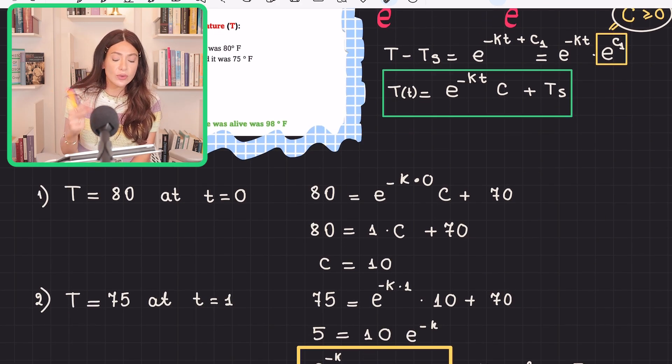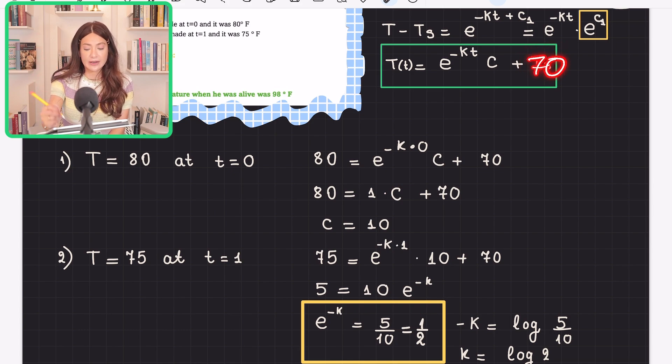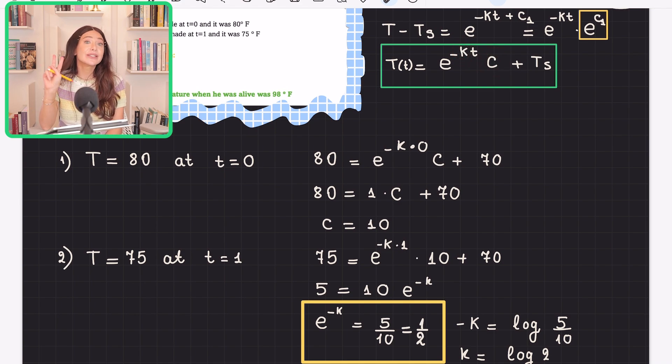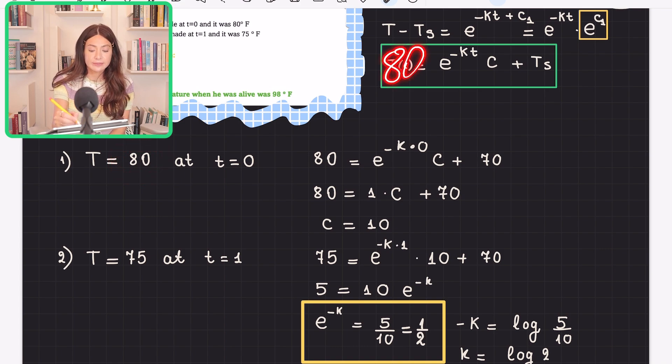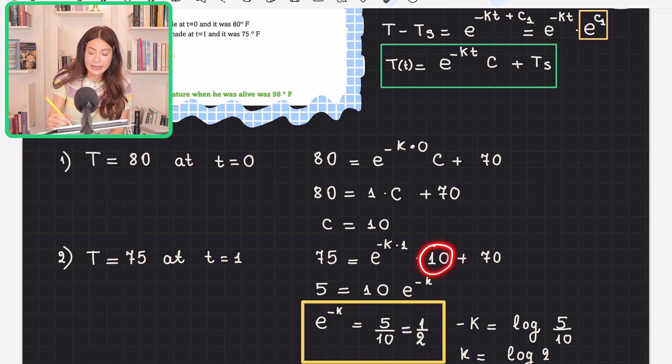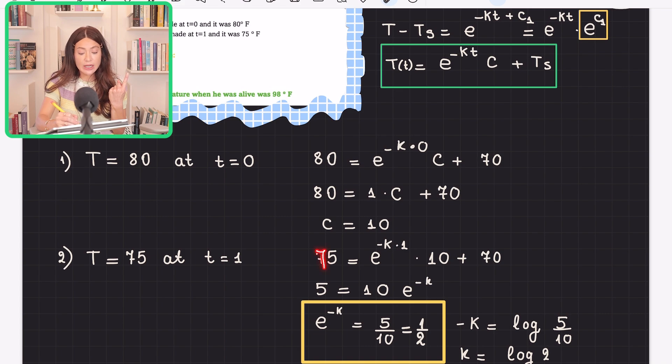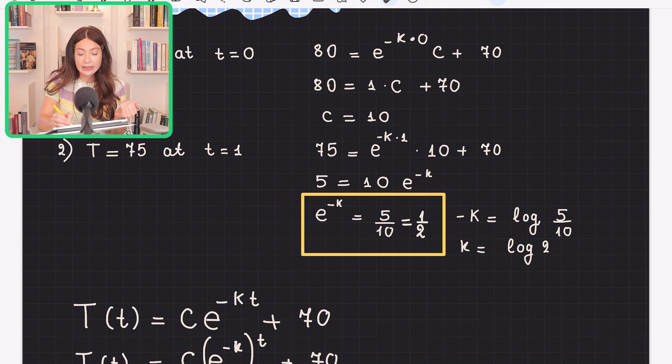Now I will take advantage of the two data points that we collected as a forensics team. I need to find K and C, there are two constants. So I need two specific conditions. At T equals zero, which is 10 AM for us, the temperature of the man was 80. I get my C value, and that is 10. I will write 10 here instead of C. And this is ambient temperature, 70. And then at time equals one, the temperature of the man that we measured using thermometer was 75 degrees Fahrenheit. Now I find K. So E raised to negative K equals five over 10, one over two.